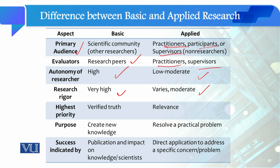When we talk about the priority of the research, in basic research we explore truth and produce knowledge. In applied research, we focus on the relevance of the issue to the community and government. The purpose of basic research is to create new knowledge, while applied research focuses on resolving practical problems or social issues.